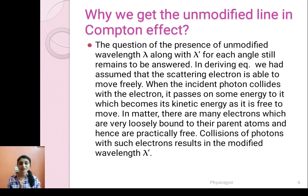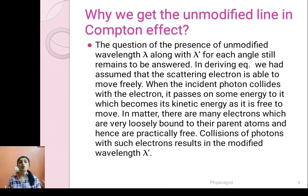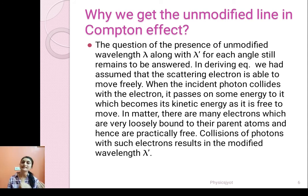As the electron is free to move, that energy is called its kinetic energy. In matter, there are many electrons which are very loosely bound to their parent atoms and hence are practically free — that is how we call such an electron a free electron. Collision of photons with such electrons results in the modified wavelength lambda dash, which is the reason for getting the wavelength which is slightly greater.